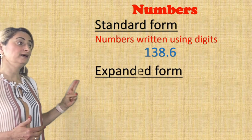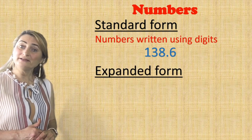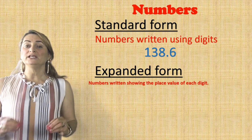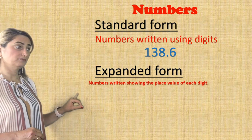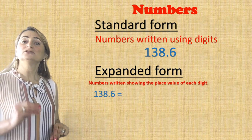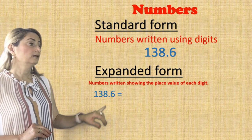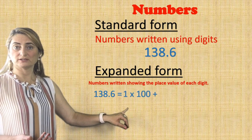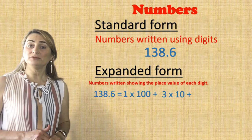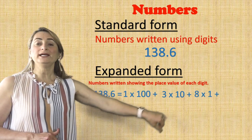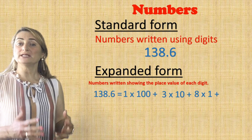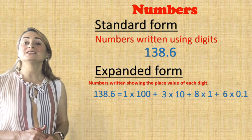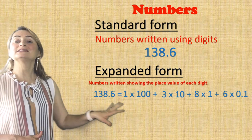We also write numbers in expanded form. In expanded form, numbers are written showing the place value of each digit. If I take this number, 138.6, I need to show the place value of each digit: one times 100, add it to three times ten because three is in the tens place, add it to eight times one because eight is in the ones place, add it to six times 0.1 because six is in the tenths place. That's called expanded form.